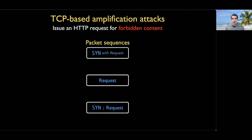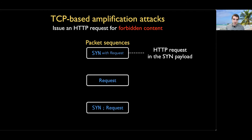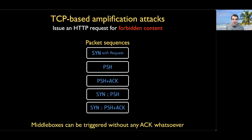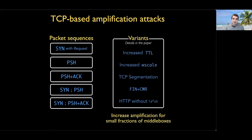Geneva found a few broad ways to elicit responses: you can send a SYN packet containing a well-formed HTTP request for forbidden content; you could directly make that well-formed request with no proper three-way handshake; or send a SYN packet followed by the real request — which we found could be sent on either a PUSH or PUSH-ACK packet. In total we found five packet sequences. In all these cases we're not doing the three-way handshake properly, or we're completely butchering it, and middleboxes can still be triggered without any ACK packets whatsoever. We also found a number of tiny variants which can improve amplification for a small number of middleboxes — they don't work globally, but for targeted attacks they can also be useful.